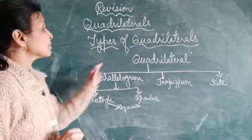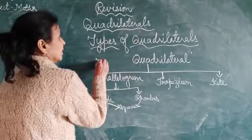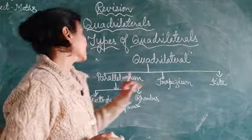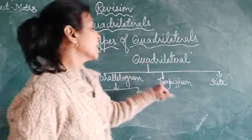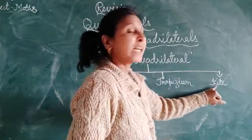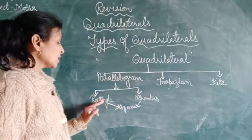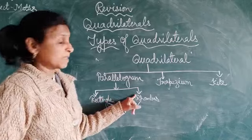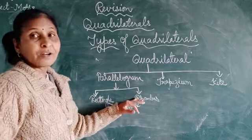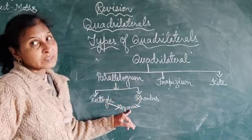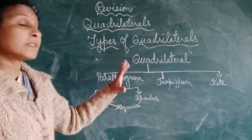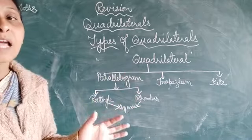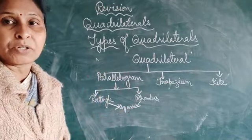Now, types of quadrilateral. A quadrilateral is divided into three parts: parallelogram, trapezium, and kite. Parallelogram further divides into rectangle and rhombus, and rectangle and rhombus together lead to a square. This is the classification of types of quadrilateral. Let us learn about each type.